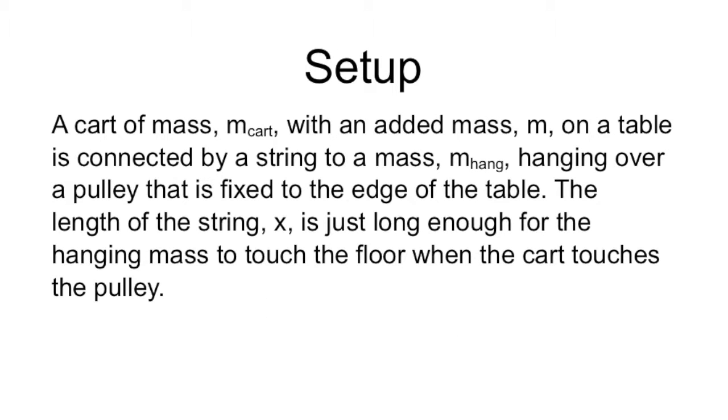Setup. A cart of mass m cart with an added mass m on a table is connected by a string to a mass m hang, which is hanging over a pulley that is fixed to the edge of the table. The length of the string, x, is just long enough for the hanging mass to touch the floor when the cart touches the pulley.